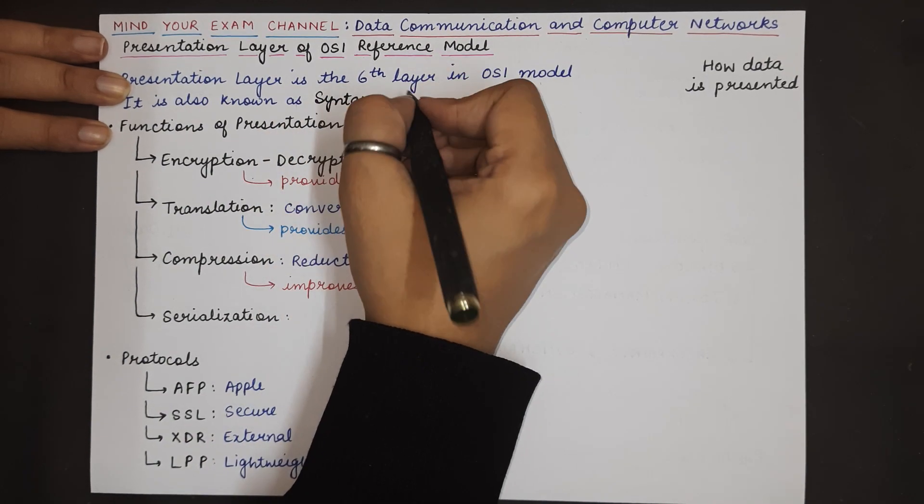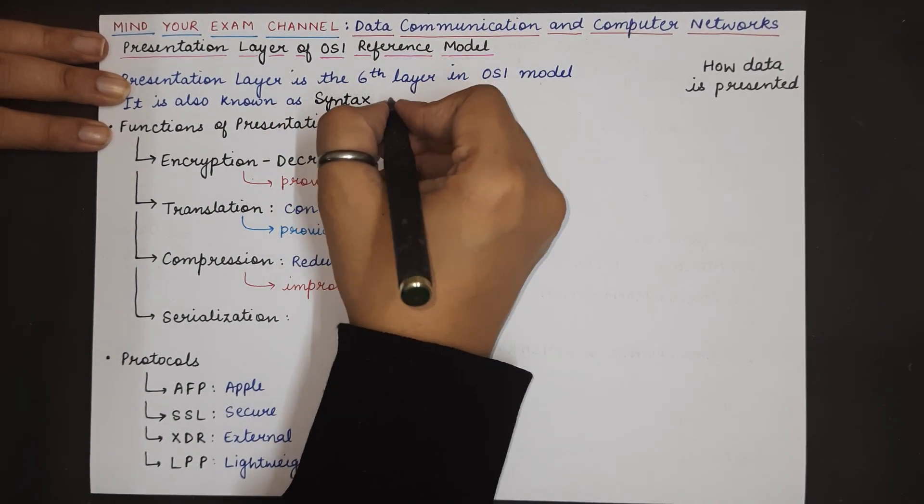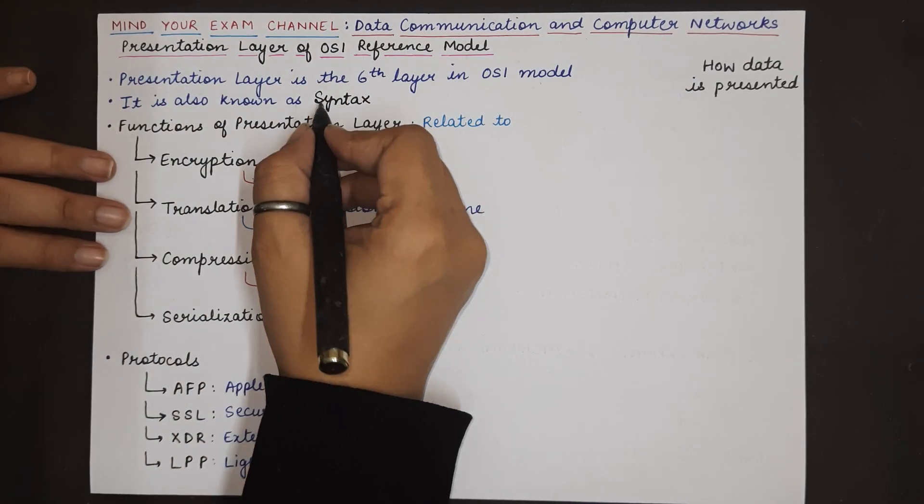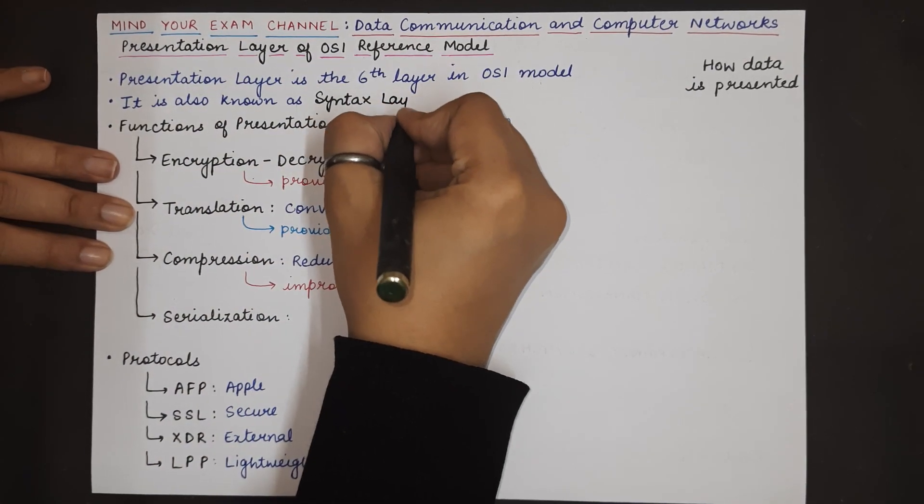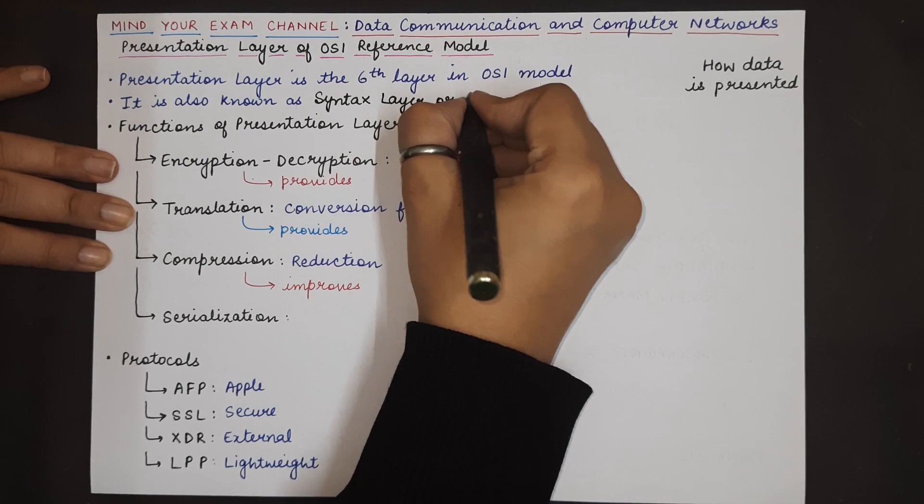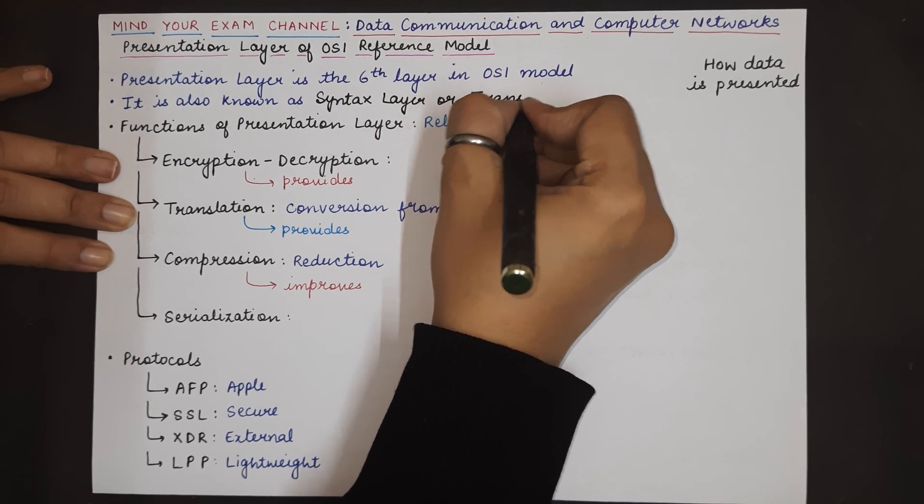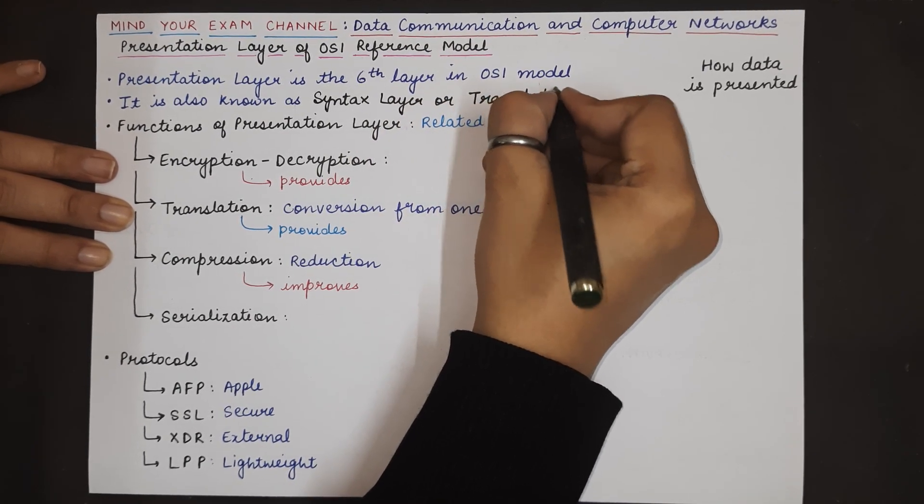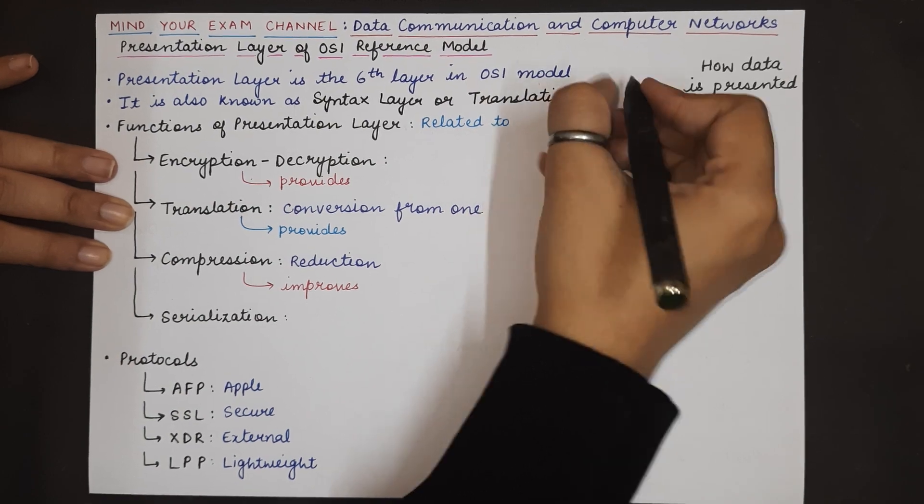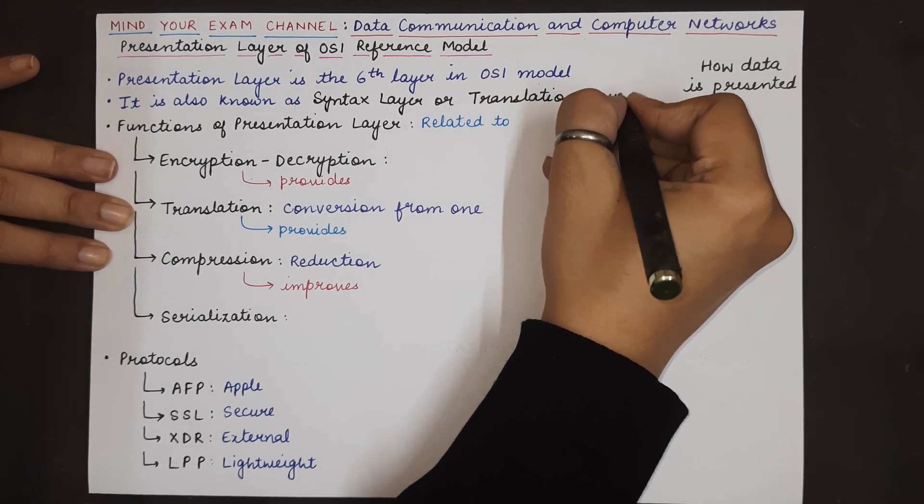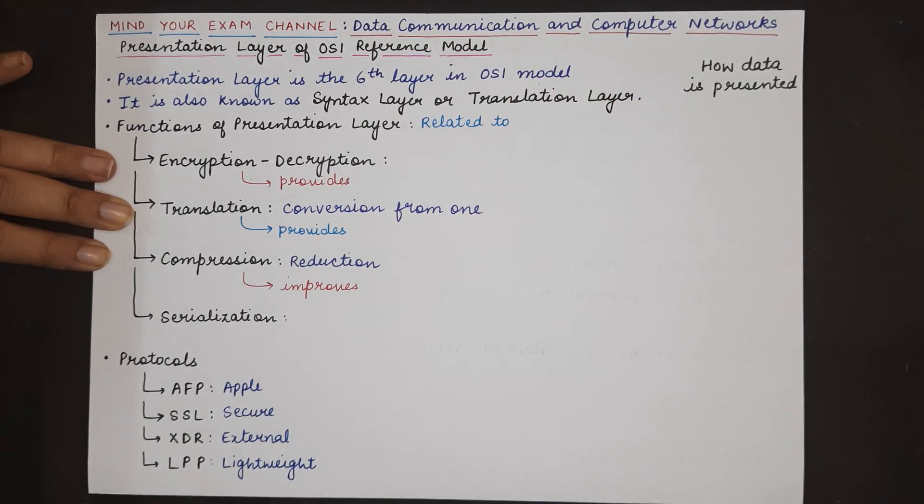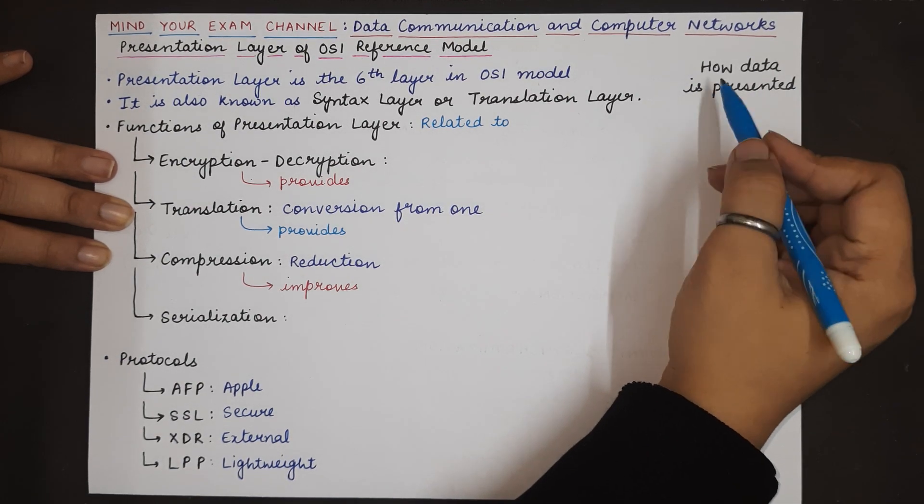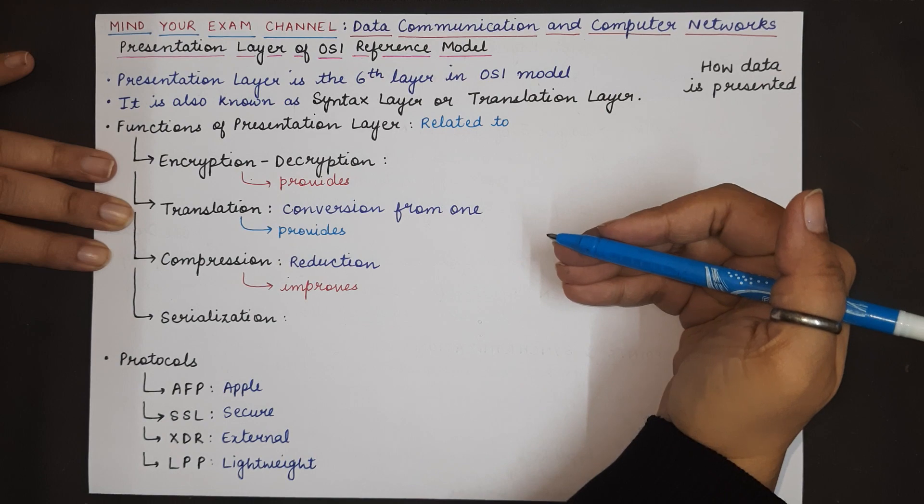Sixth layer in the OSI reference model, this particular layer is also known as the syntax layer or the translation layer. There is a reason behind it why it is known as translation layer or the syntax layer. This is because this entire layer is concerned with how data is presented to the layers below it.